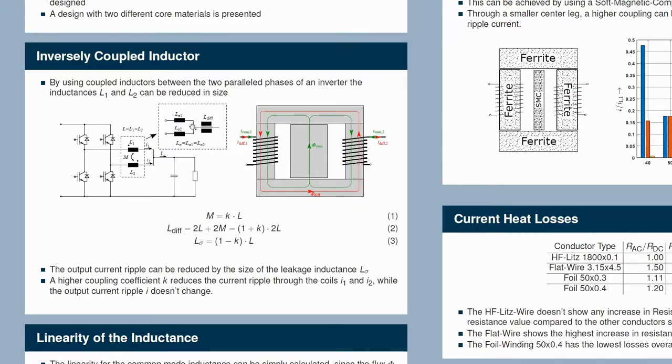So basically, if we choose a higher leakage inductance, we will reduce the output current ripple I.